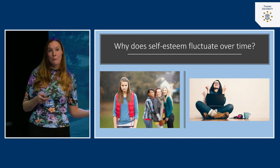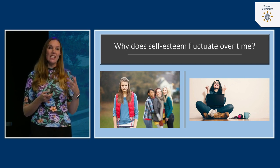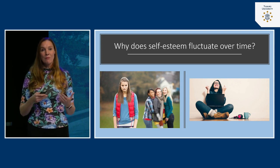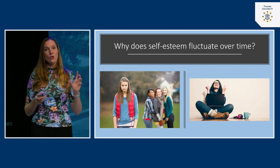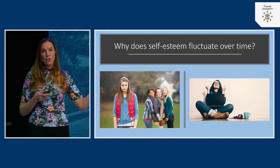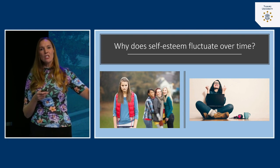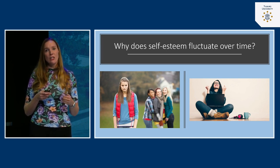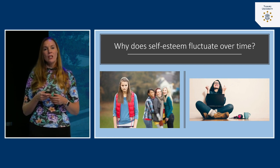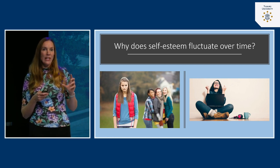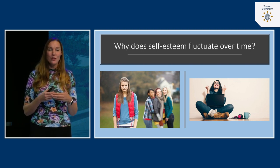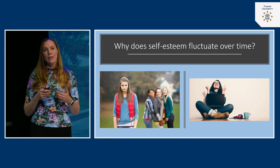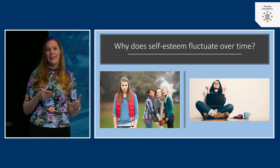Secondly, self-esteem has a lot to do with how we fit into a group. According to sociometer theory, self-esteem is actually an indicator of our interpersonal success. If we feel good about ourselves, we are thriving in our close relationships with others. We see this with children in school who are bullied or excluded — their self-esteem typically drops dramatically, sometimes causing depression and severe feelings of loneliness. It's important to surround yourself with people who give you a good feeling and include you in the group.